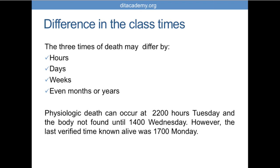In a situation where skeletal remains are found in the woods — say a hunter finds a skull — your legal time of death may be the time you arrived and determined it was a human skull. Your estimated time of death spans from the last time they were known alive to today. You can narrow it down somewhat, but you have to understand these times vary, and that's okay. That's why there are three legally accountable times of death.